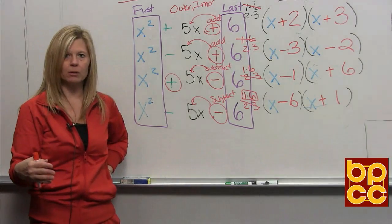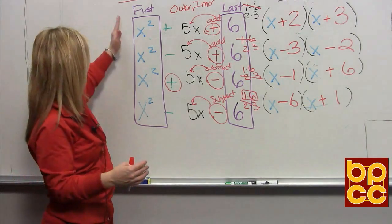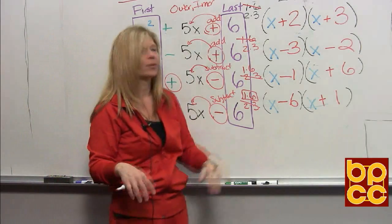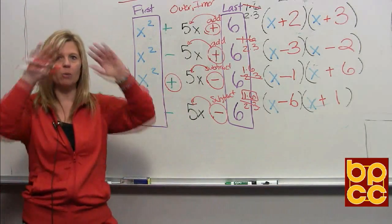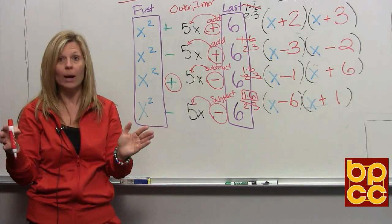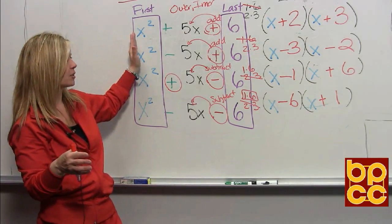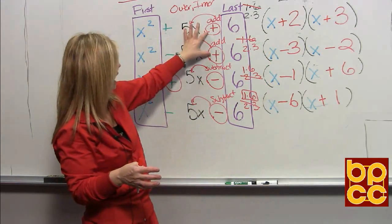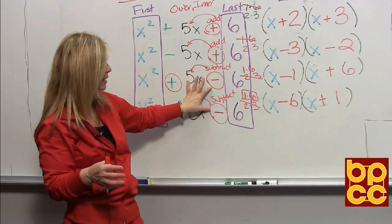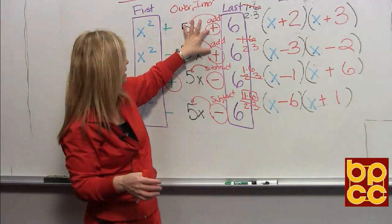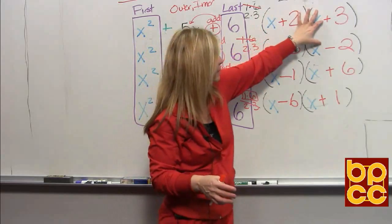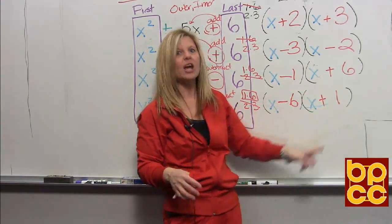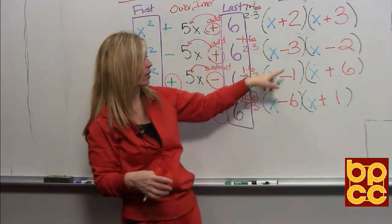To factor a trinomial: first, you must be in descending order — x squared, then x, then your constant. You will always factor a trinomial into two sets of parentheses. Start with the first term, then move to the last, then read to see whether you add or subtract to make the middle term. If you add, the symbols are always alike. If you subtract, the symbols are one of each — and the sign in the middle goes to the larger.